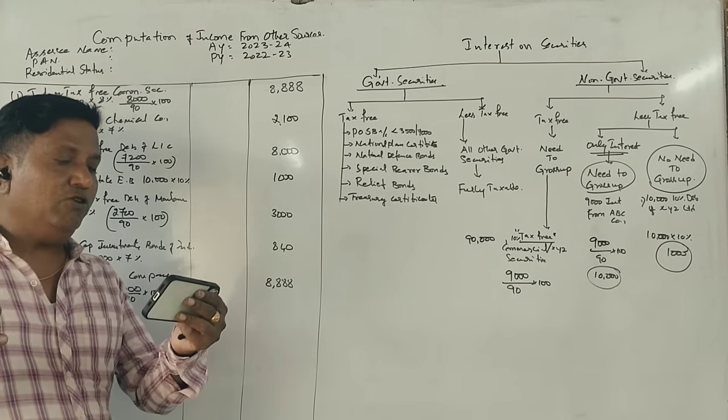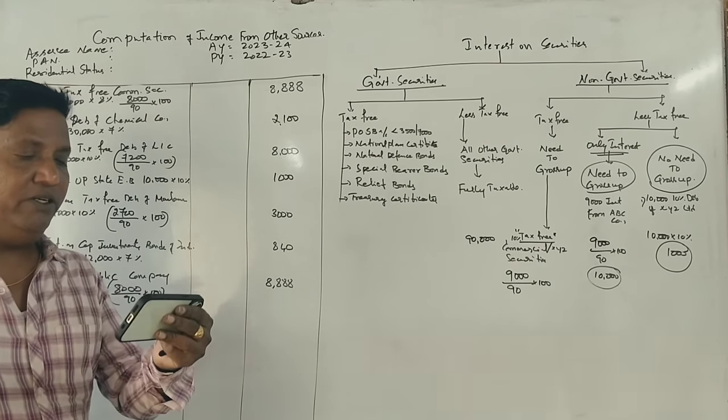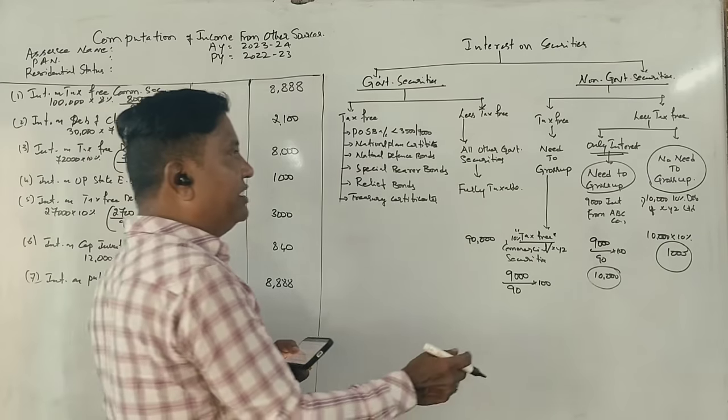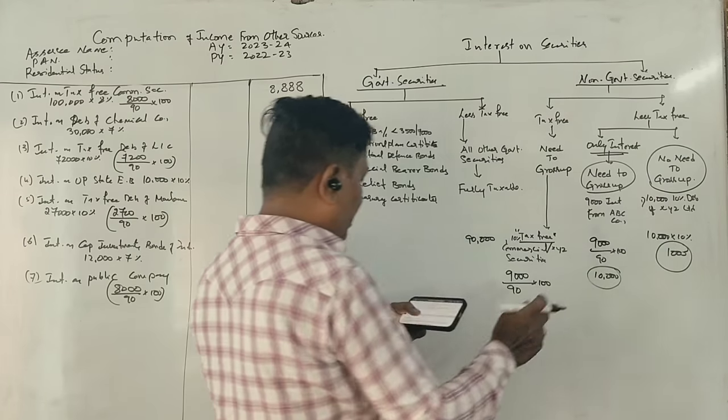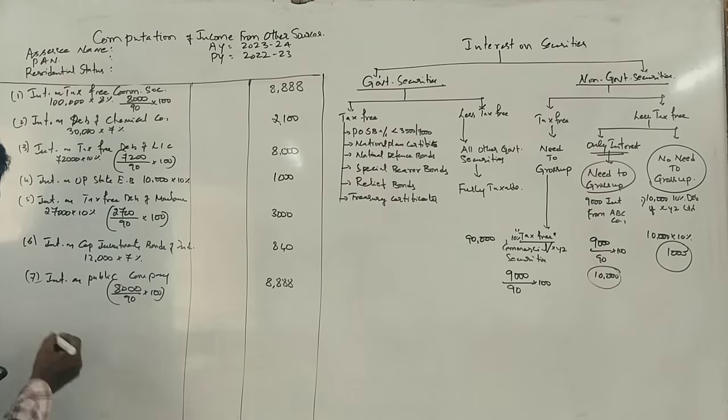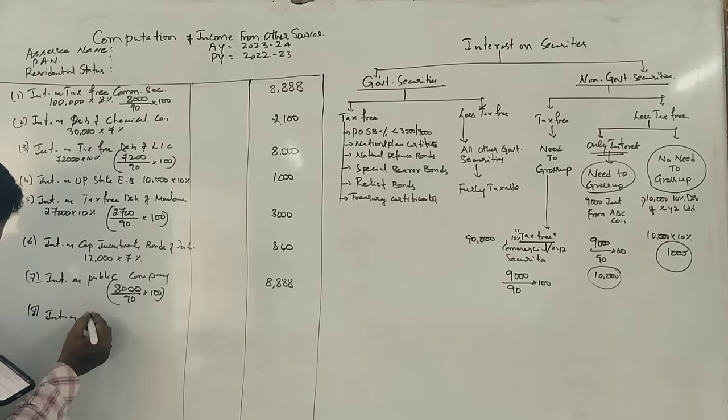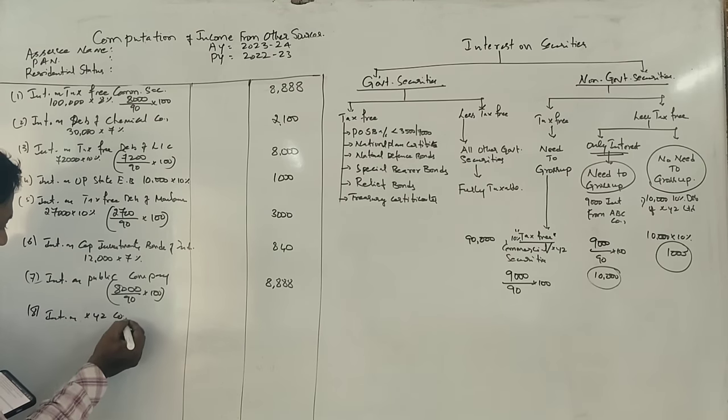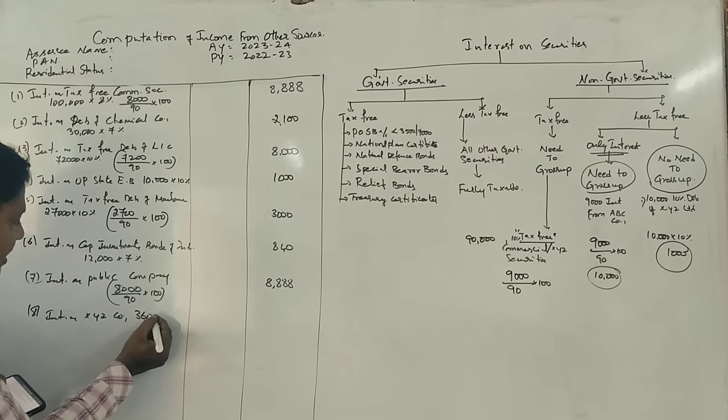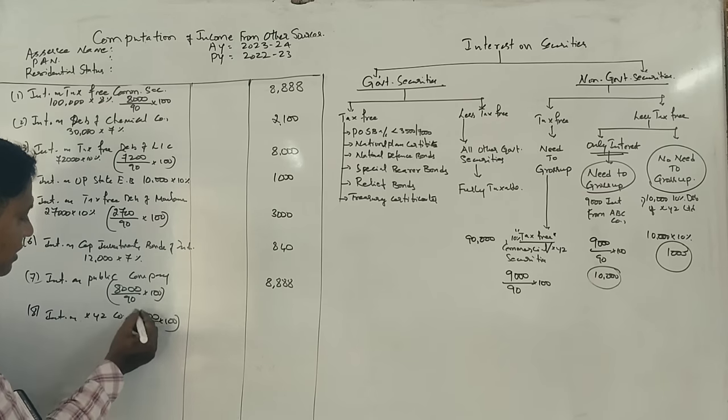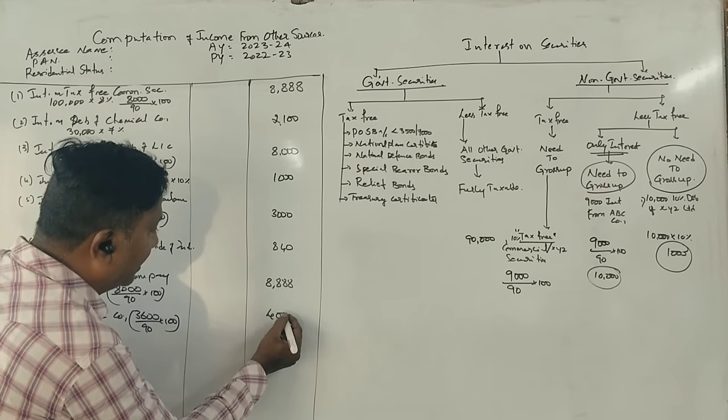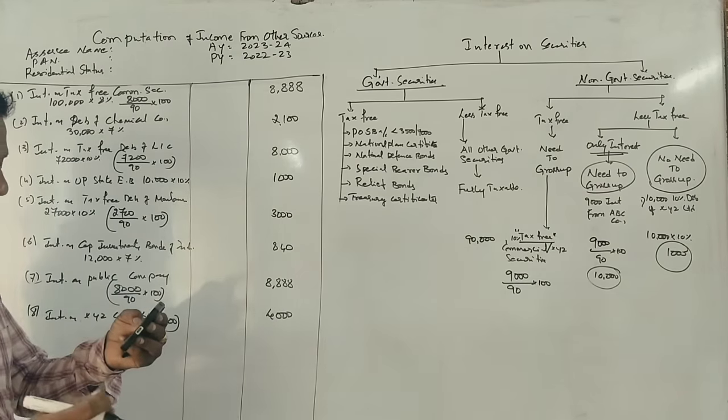Rs. 3,600 interest received from XYZ. Interest on XYZ Company: 3,600 divided by 90 into 100 equals Rs. 4,000.